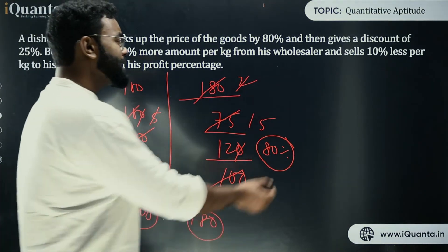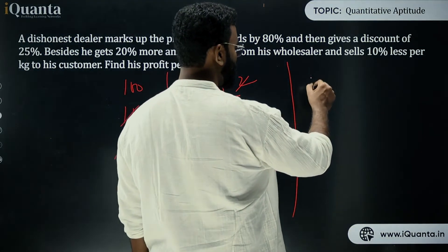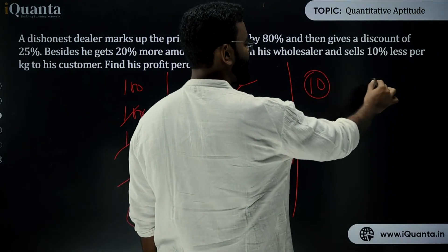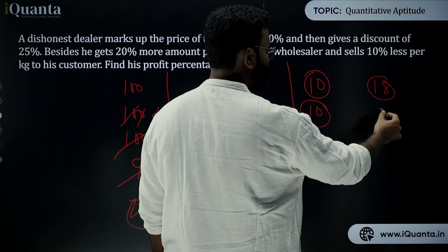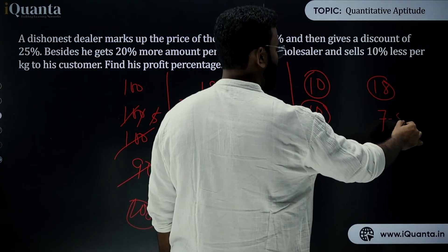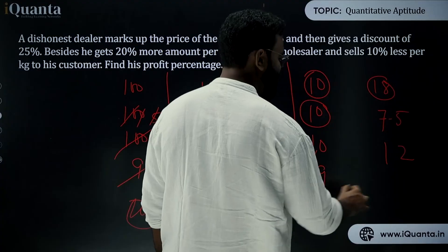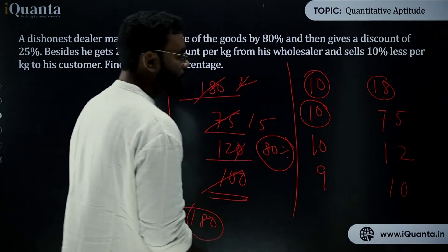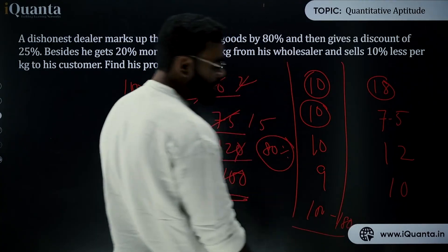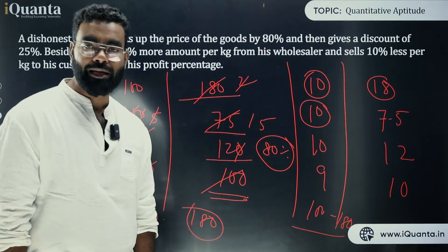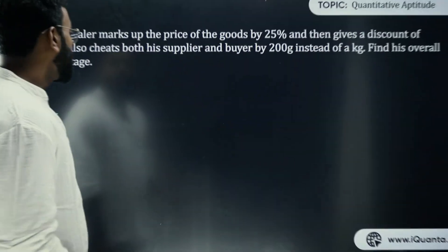You can also solve this with a base of 10 instead of 100. Cost price = 10, mark price = 18 (80% markup), selling price = 7.5 (25% discount on 10), buying = 12 for 10, selling 9 as 10. Working through this also gives 100 becoming 180, confirming an 80% profit. This cross-multiplication method is the smartest and fastest way to solve these questions.